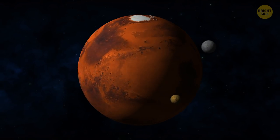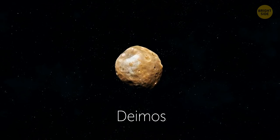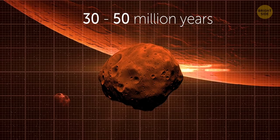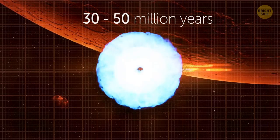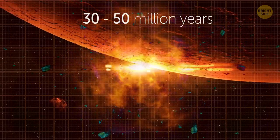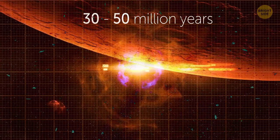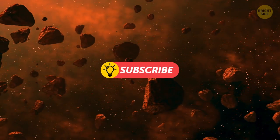Mars has two moons, Phobos and Deimos. In the next 30 to 50 million years, Mars' gravitational forces will tear Phobos apart, and it will likely result in the formation of a ring around the planet. I won't be around it.